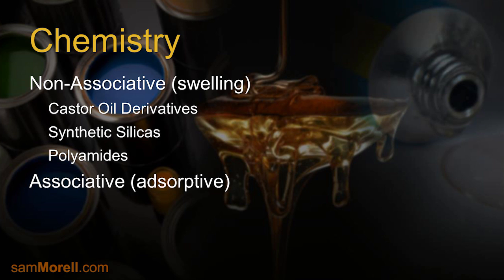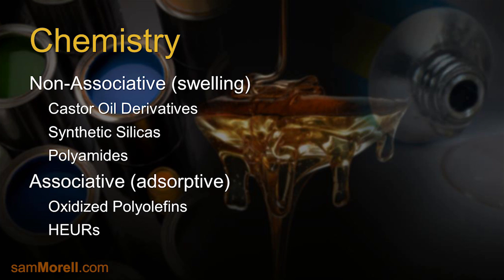The associative types of rheological agents include oxidized polyolefins and hydrophobically modified ethoxylated urethanes, or HEURs. And there are many other types, like HASE — hydrophobically modified alkali-swellable emulsions — and HURase, hydrophobically modified ethoxylated urethanes with an alkali-swellable emulsion component. These products adsorb onto the surface of formulating components to form a network structure. As you recall from a previous tutorial, a key requisite for rheology is morphology, and a network structure contributes to morphology. Let's first look at castor oil derivatives to understand how they create this network, this morphology, and thus rheology.